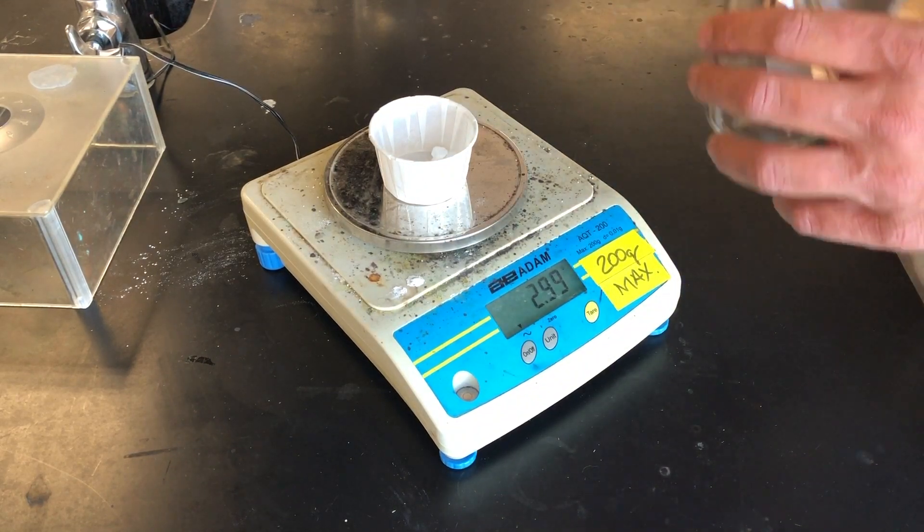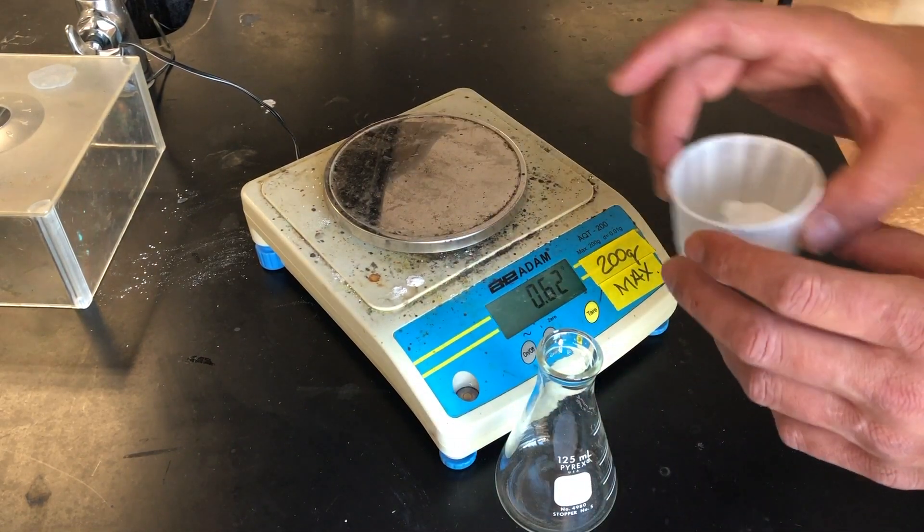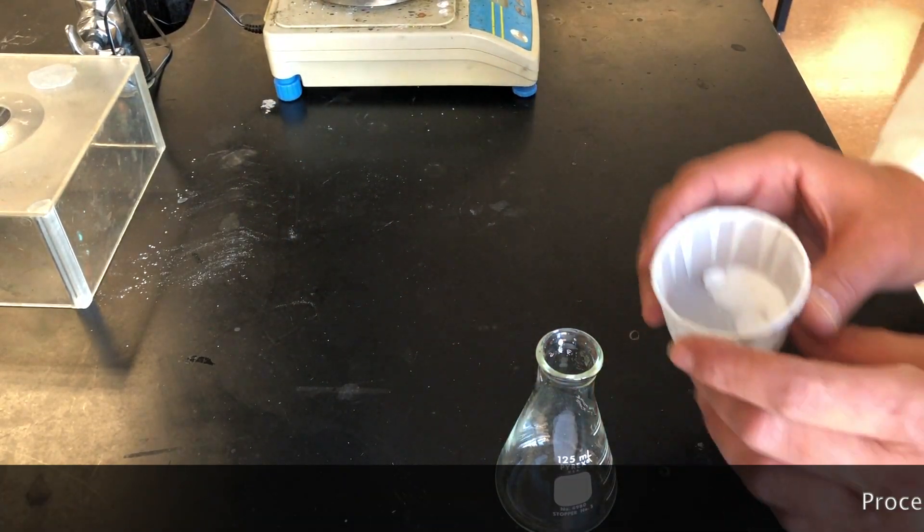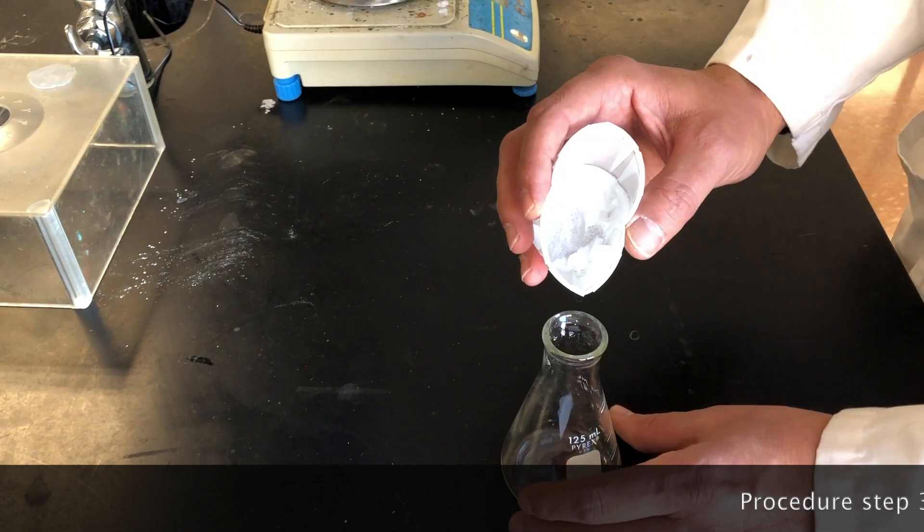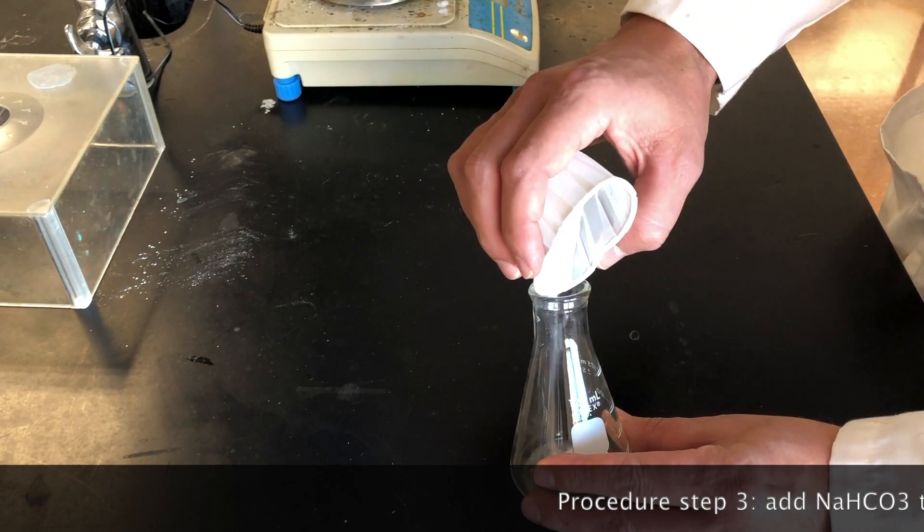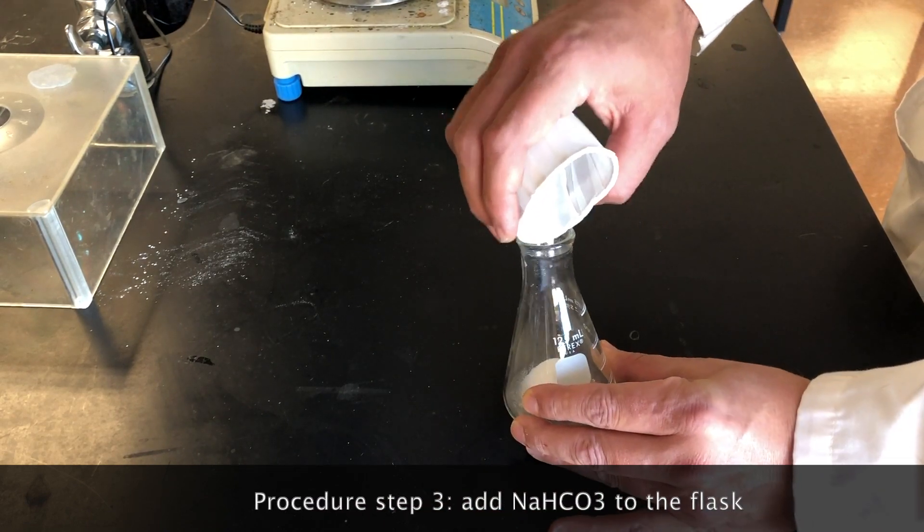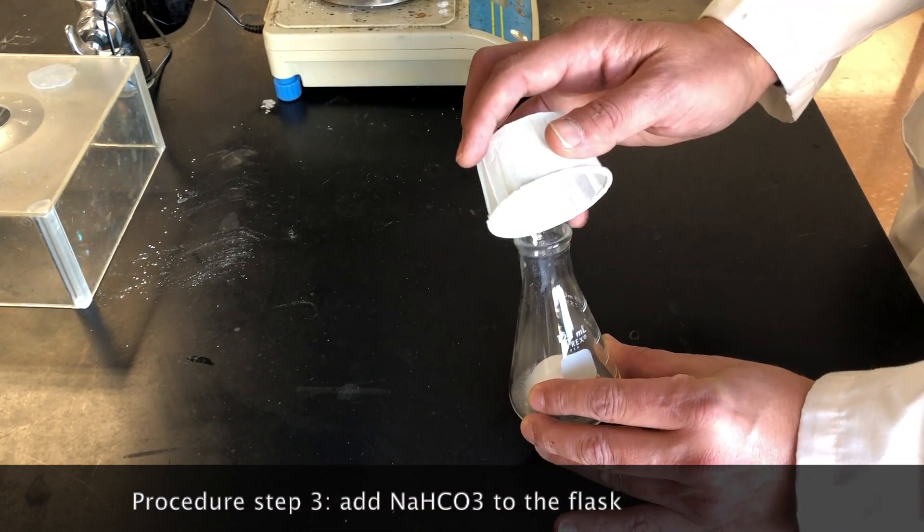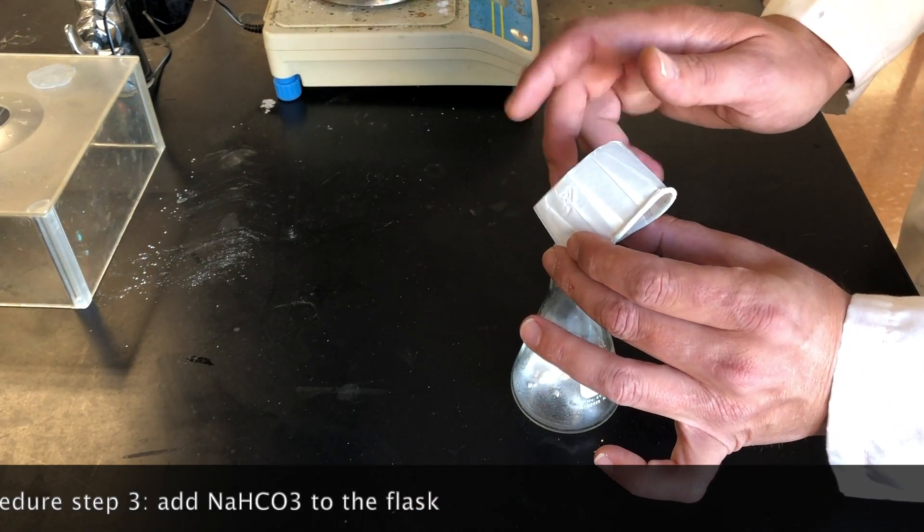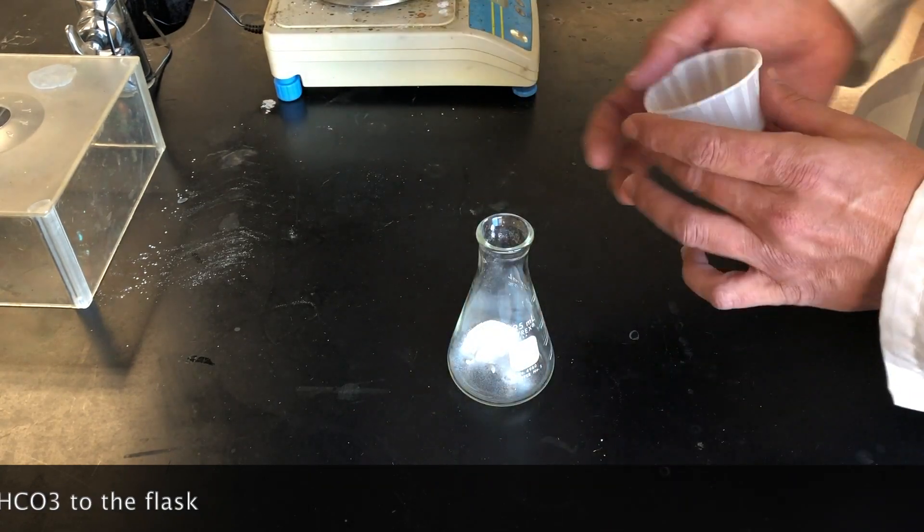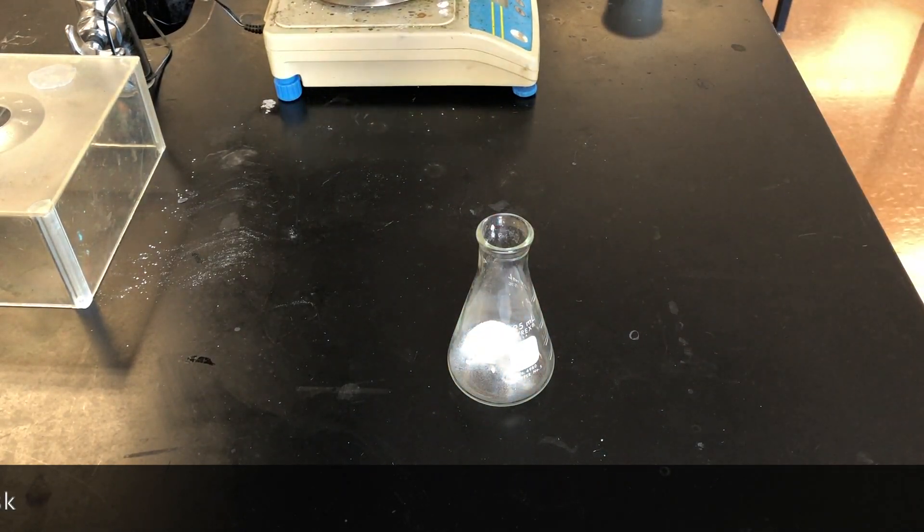We are going to take the sodium bicarbonate, and we are going to put it into our Erlenmeyer flask, making sure that we don't spill any, so all of the sodium bicarbonate goes into the flask. Now we're ready to perform the chemical reaction.